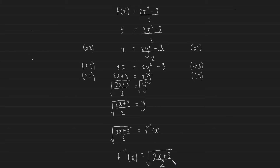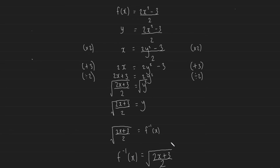Let me go over the steps quickly again. Step one: replace f(x) with y. Step two: swap the positions of x and y, leaving all operations in their respective places. Step three: rearrange for y. Step four: once you've rearranged for y, replace the y with f⁻¹(x) for good notation. That's how you find the inverse of a function.